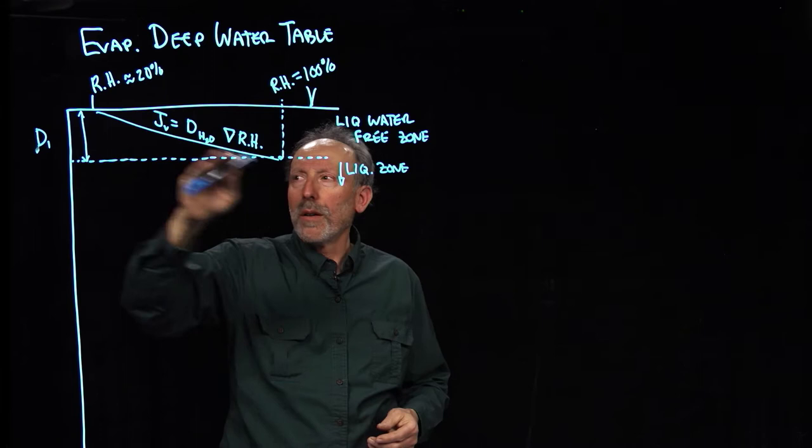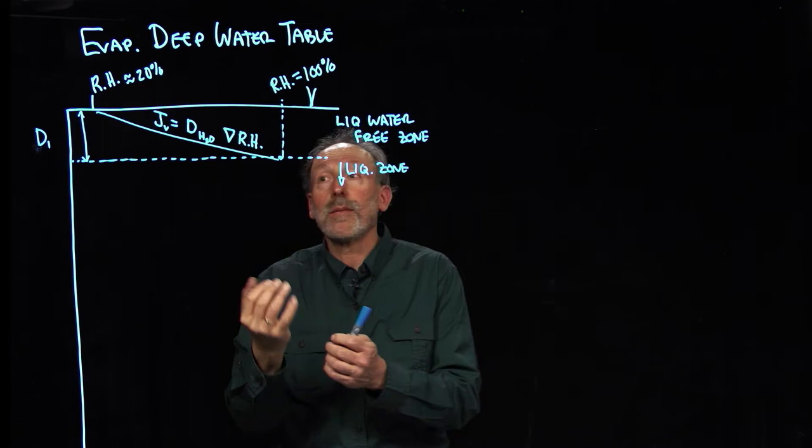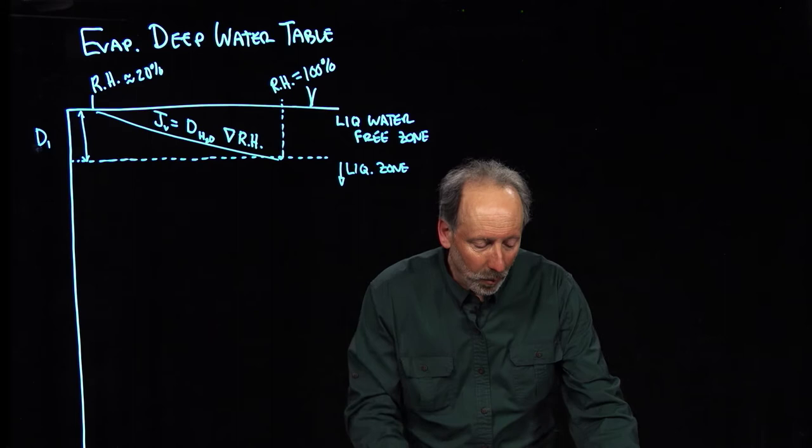So what we have then is a region where vapor is the only driving force. Now this flux has to be supplied from below. Now let's look at where that flux comes from.